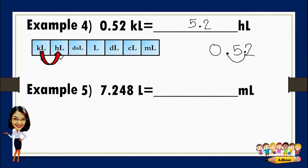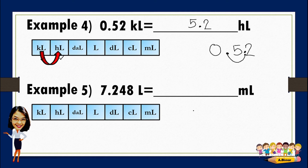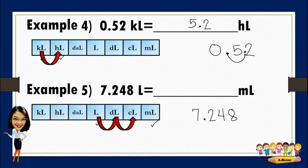For number five, convert 7.248 liters to milliliters. We write the given: 7.248. From liters to milliliters: one, two, three — three movements to the right. We move the decimal point three times to the right. The answer is 7,248.